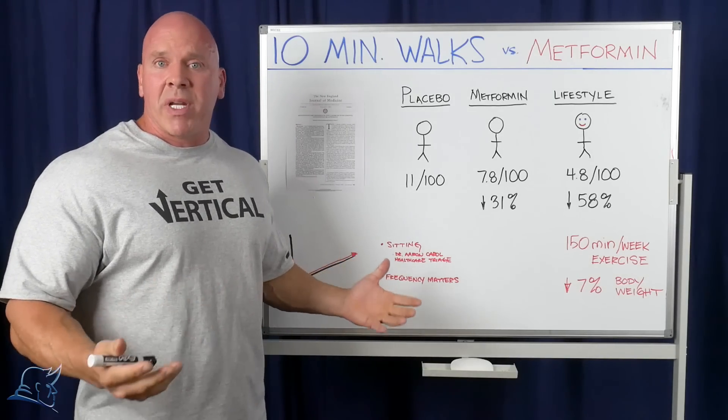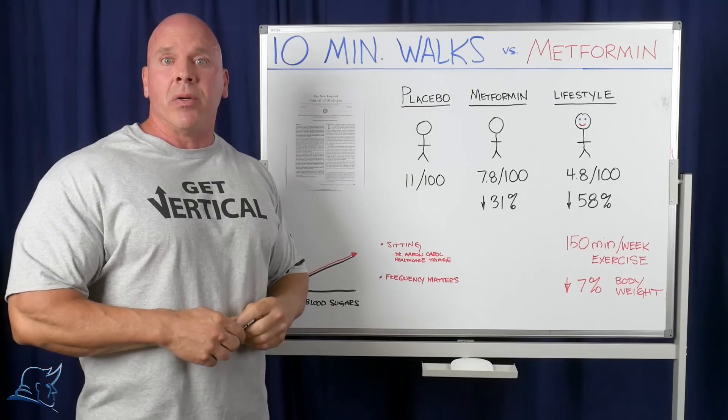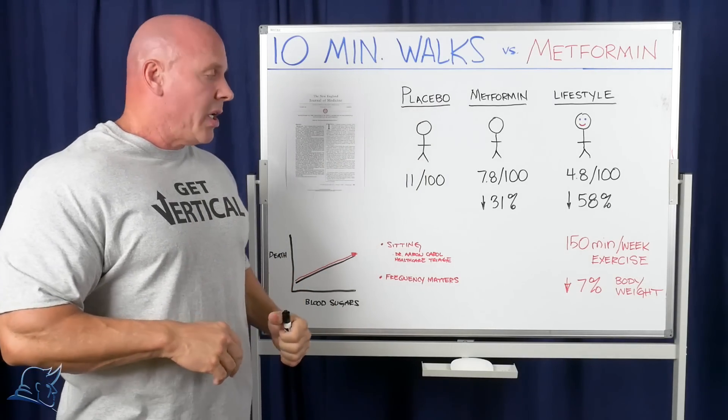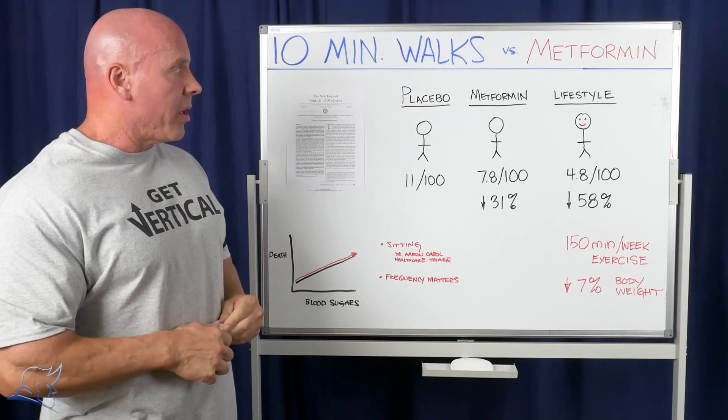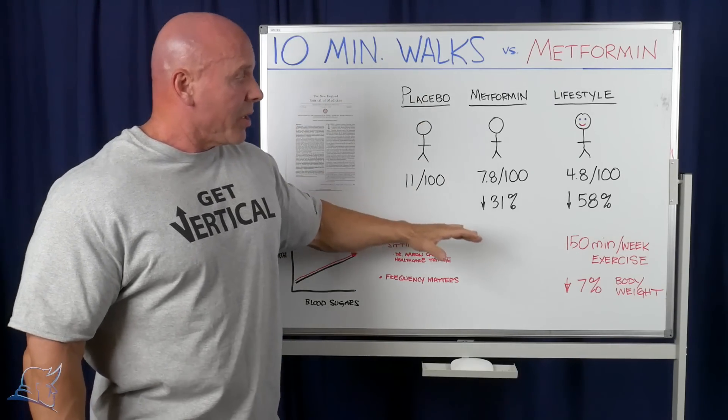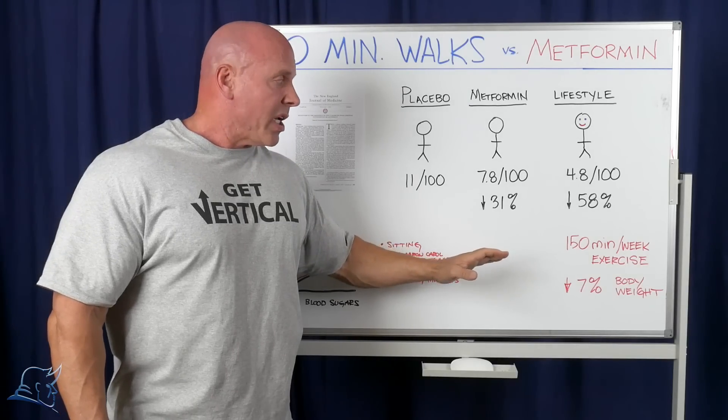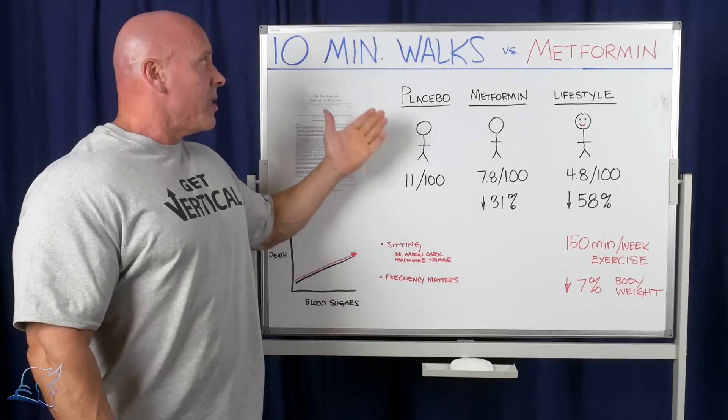That demonstrates that the frequency matters. If you move, say, three or four minutes out of every hour, or as I like to recommend, you take a 10-minute walk after each meal. You can decrease blood sugars and dramatically improve your health outcomes. So that's the solution for a twice as effective method of controlling blood sugars and potentially preventing diabetes is the 10-minute walk.